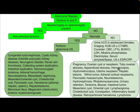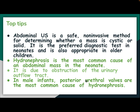Differential diagnosis in older children may include pregnancy, ovarian cyst or neoplasm, tubo-ovarian abscess, appendiceal abscess, hematocolpos, hydrometrocolpos, uterine neoplasm, hepatic lesion, Wilms' tumor, adrenocortical neoplasms, pancreatic mass or cyst, neuroblastoma, hydronephrosis, rhabdomyosarcoma, urinary retention, teratoma, intestinal tumor, mesenteric cysts, omental cysts, lymphangioma, choledochal cysts, constipation, inflammatory bowel disease, retroperitoneal hematoma, and lymphoma.